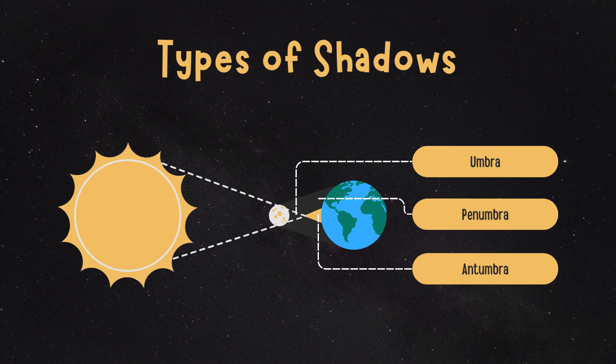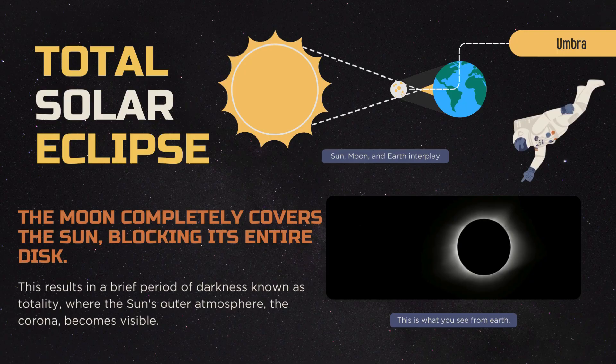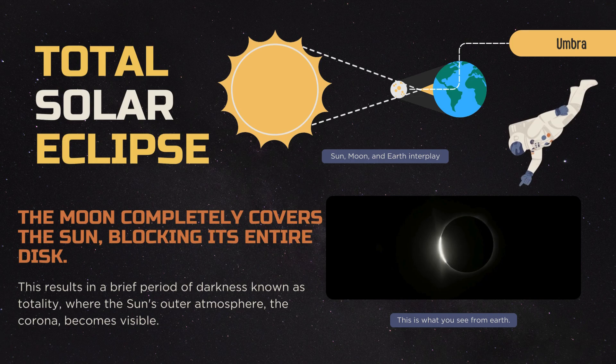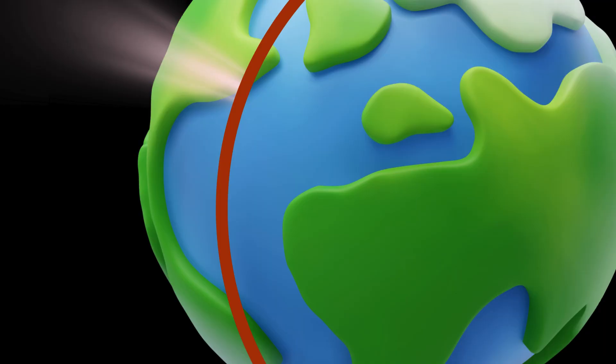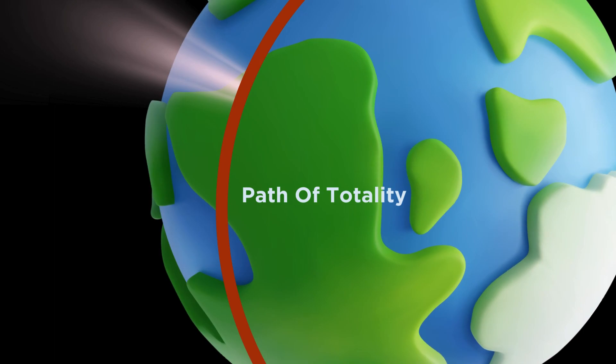There are four types of solar eclipses. The first and most spectacular is the total eclipse, when the moon completely covers the sun, revealing the sun's corona. A total eclipse can only be seen if you are standing within the umbral shadow. That's why the imaginary line created by this shadow as it passes across earth is known as the path of totality.